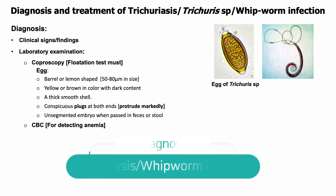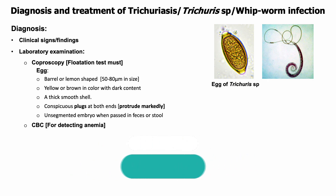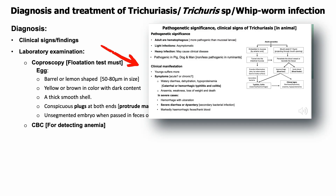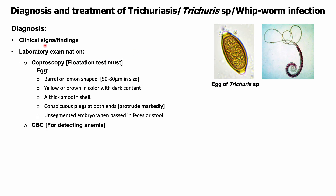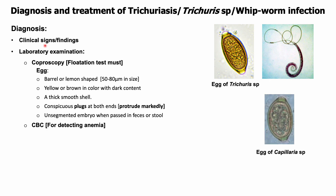Diagnosis of trichuriasis in animals and men is based on clinical signs. Confirmatory diagnosis includes examination of feces or stool; flotation techniques using a flotation solution with specific gravity of 1.3 are highly recommended. Microscopic examination reveals characteristic eggs: barrel- or lemon-shaped, yellow or brown in color, with markedly protruded polar plugs. Eggs should be differentiated from Capillaria species eggs, which are smaller and have less protruded polar plugs. A complete blood count can also be done to detect anemia.